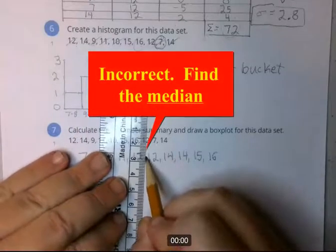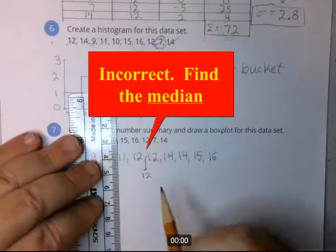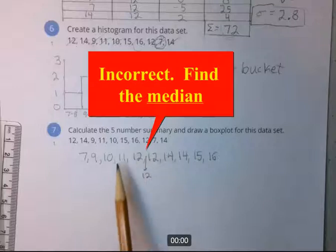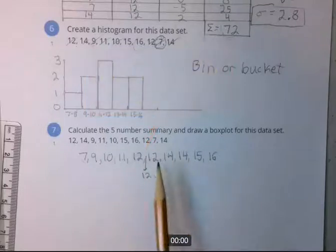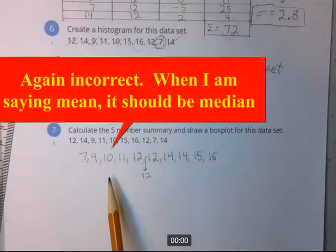The first thing you do is you find the mean. So remember that was a 12 that was in between these two 12s right here. So there's the mean. Now you have half the values above and half the values below, five below and five above.